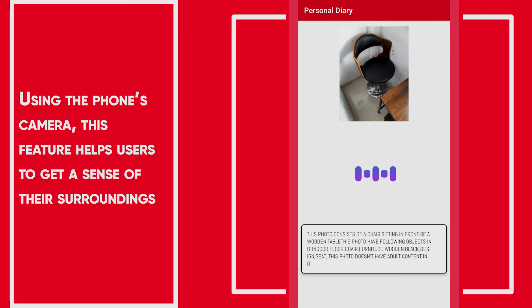This photo doesn't have adult content in it. To repeat the result, double tap anywhere on the screen. To click an image again, long press anywhere on the screen, or shake your phone to go back.